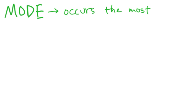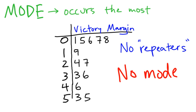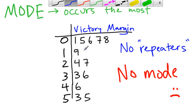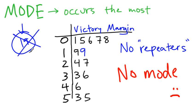Next, mode. Mode is just the one that occurs the most. For this data, as you can see, there are actually no repeaters — the football team never won by the same amount of points more than once. So there's actually no mode with this data. Let's say for a minute that we won by 19 twice — then 19 would have been our mode. But we never actually won by the same score twice.